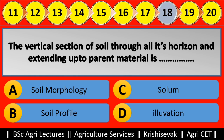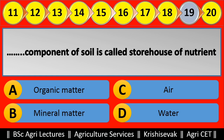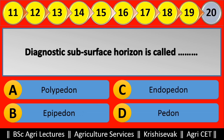Question 19: Blank component of soil is called the storehouse of nutrients. Options are: (a) Organic matter, (b) Mineral matter, (c) Air, (d) Water. Right answer is Organic matter.